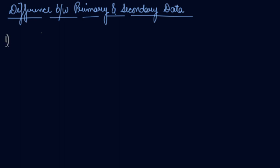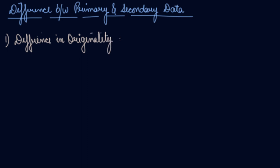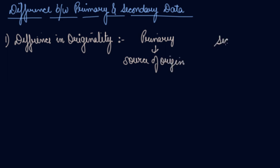Now we will study the difference between primary and secondary data. The first difference is the difference in originality. The source of primary data is the origin, whereas the source of secondary data is already in existence and not from the source of origin. Primary data are collected from the source of origin, whereas secondary data are not from the source of origin — so they are not original.